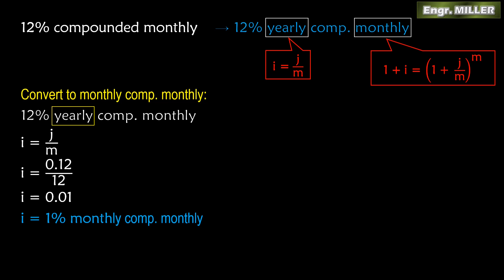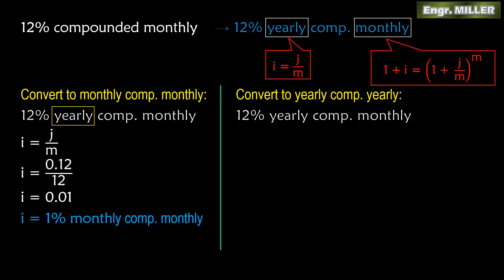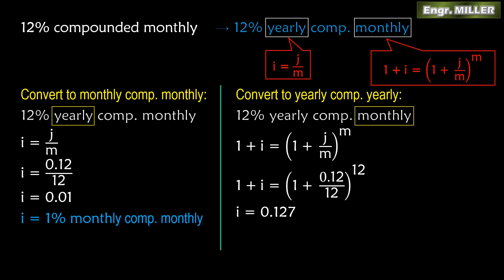To convert 12% compounded monthly to yearly compounded yearly: start is already yearly, but the end — monthly — needs to become yearly. Use the one-peso one-year analysis: (1 + 0.12/12)^12 − 1 = 0.1268, giving approximately 12.68% or 12.7% yearly compounded yearly. Master this conversion — without it you'll get wrong answers in engineering economy.